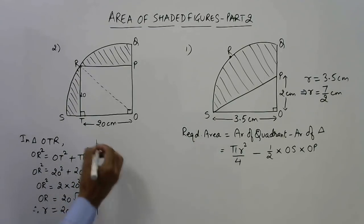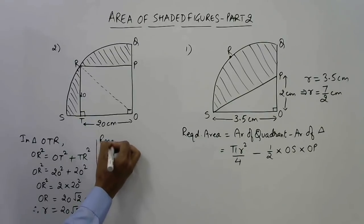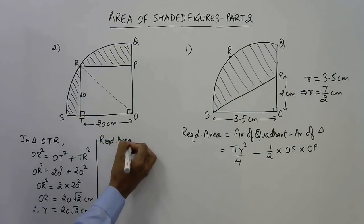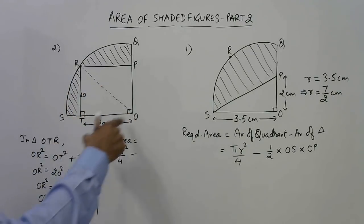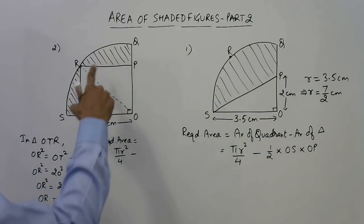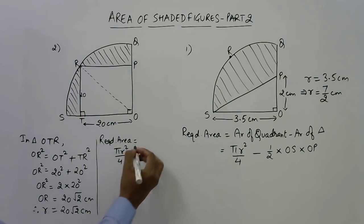Now this is the first step, and after this we can apply the same formula. That is, to find the required area we will use the same formula: the area of the quadrant is πr²/4, and this time we have to subtract the area of the square. What is area of square? It is side into side, that is 20 into 20.